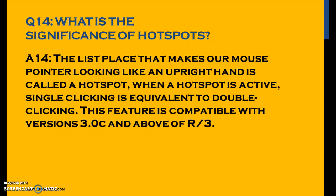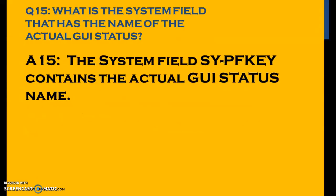What is the significance of hotspots? The list area that makes the mouse pointer look like an upright hand is called a hotspot. When a hotspot is active, a single click is equivalent to a double click. This feature is compatible with versions ABAP 3.0C and above for all R/3 applications, and since we are using ECC, it should work for all systems.